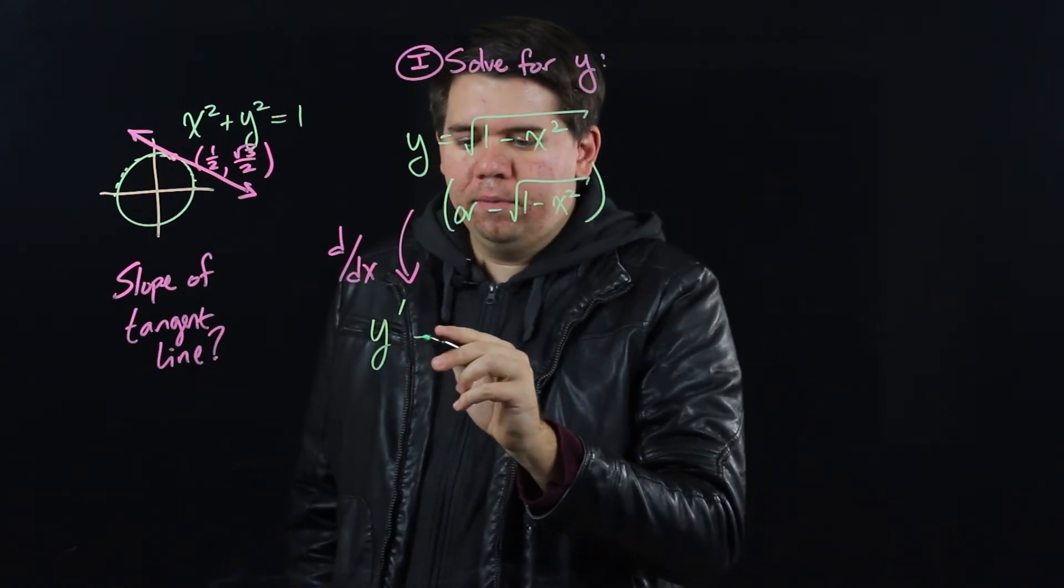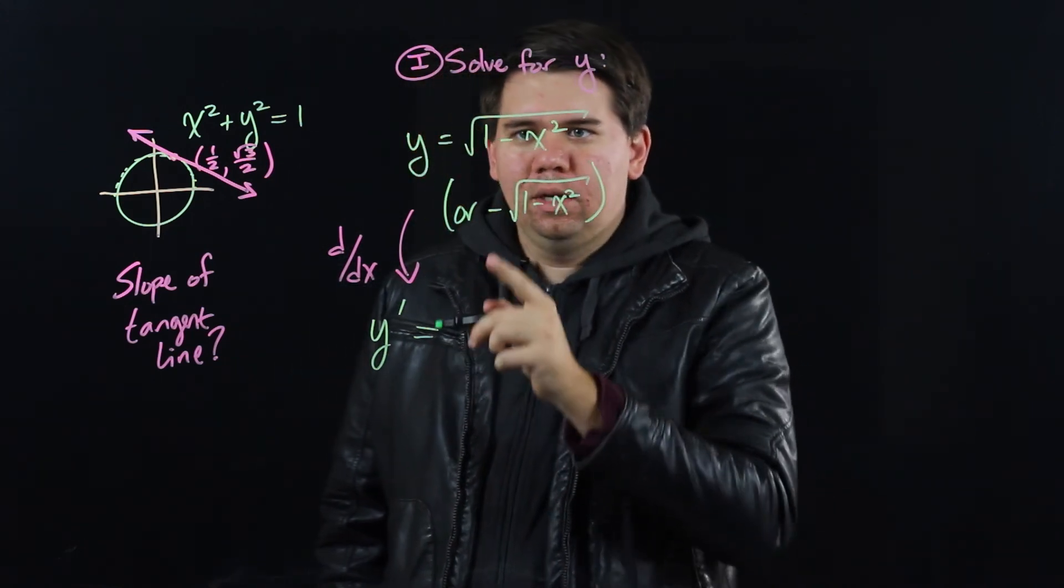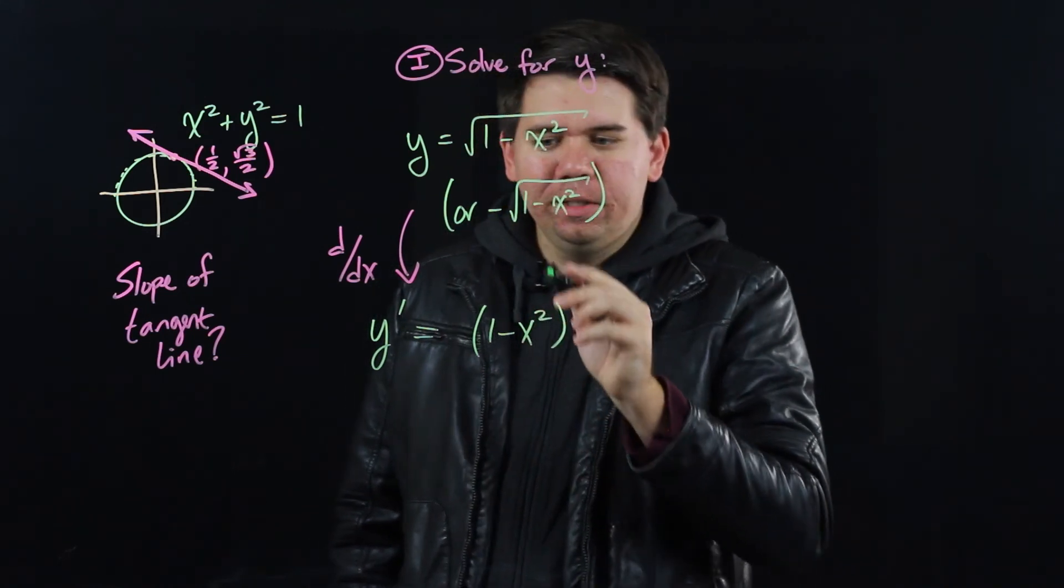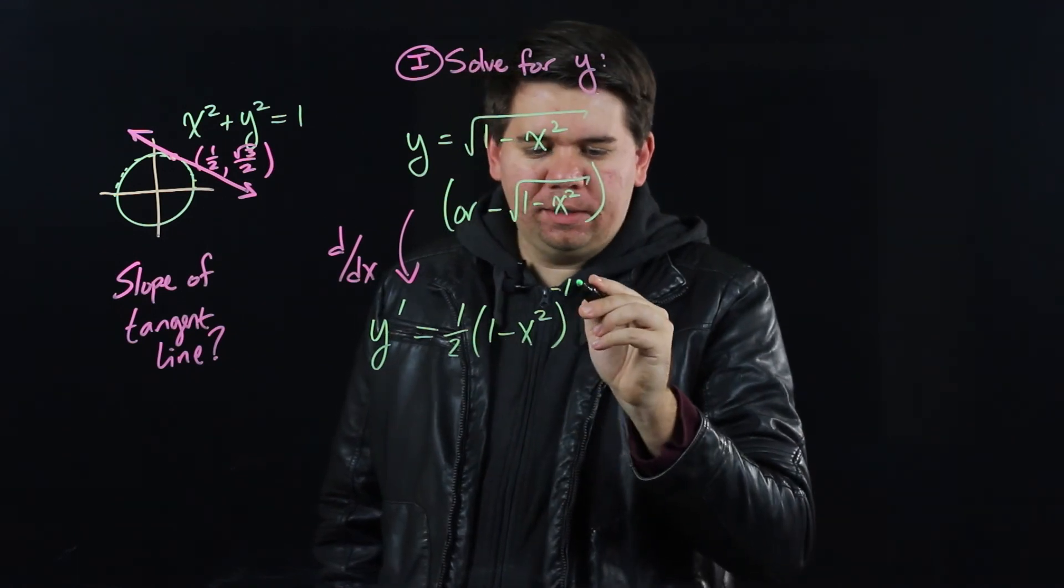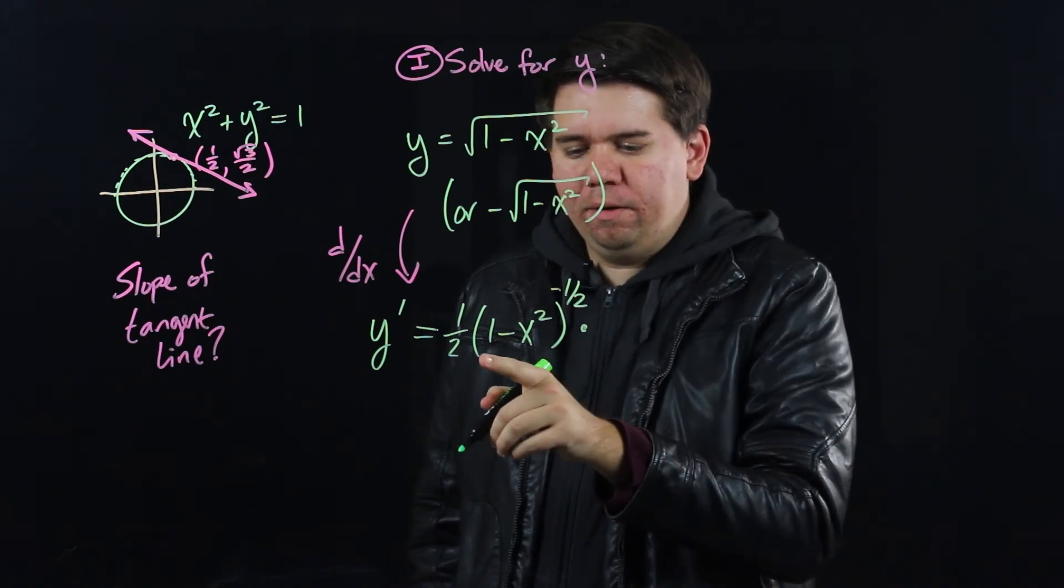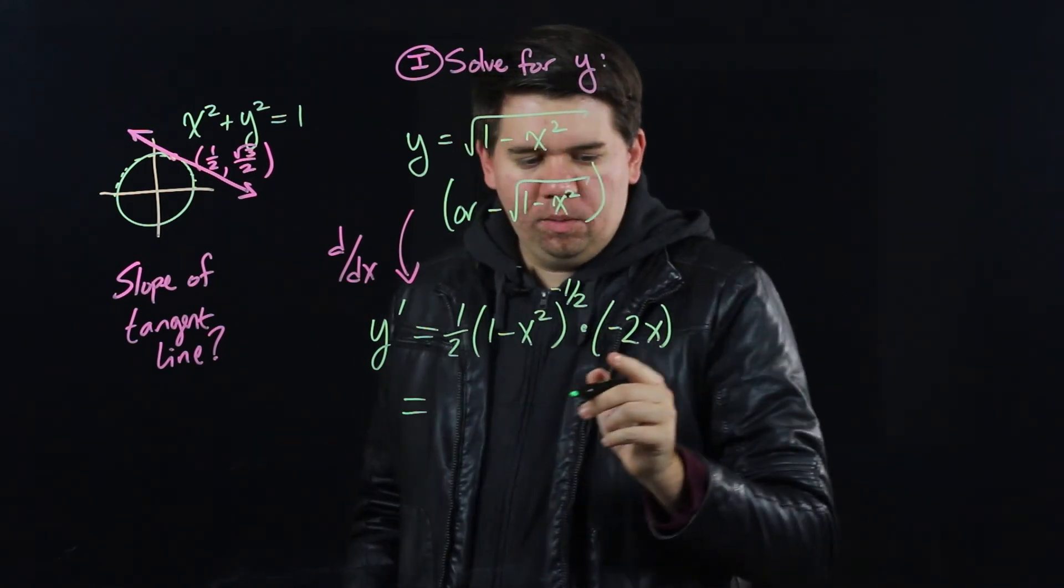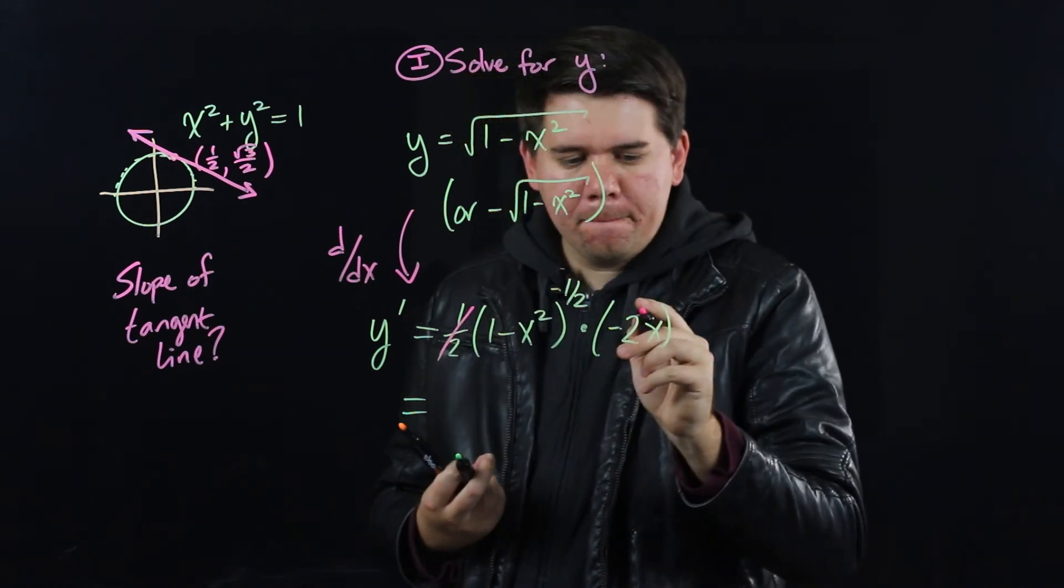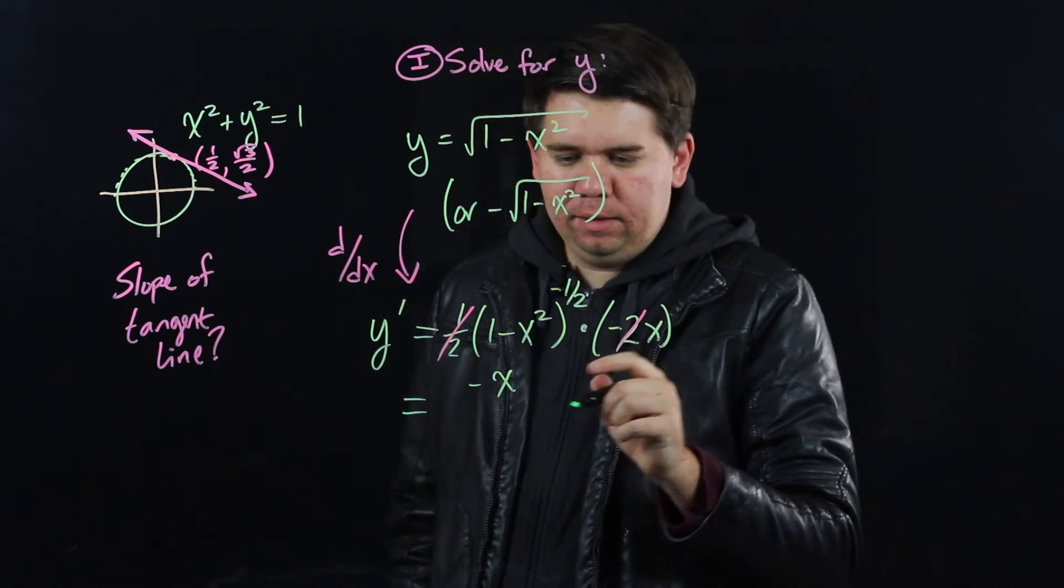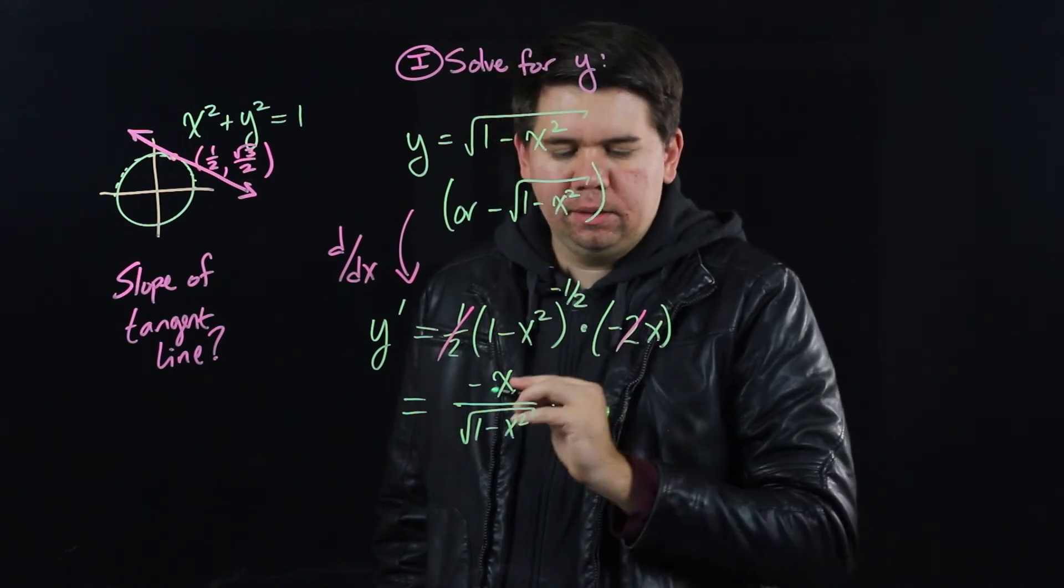We get y prime. The derivative of y is just the derivative of the square root. The square root is the same thing as (1 minus x squared) to the 1/2 power. So that 1/2 will come down and be subtracting 1 from it to get minus 1/2. And then by the chain rule you need to times this by the derivative of the inside, so times minus 2x. And what do we get? Well the 2 and the 1/2 cancel. And hence we have negative x divided by the square root of 1 minus x squared.